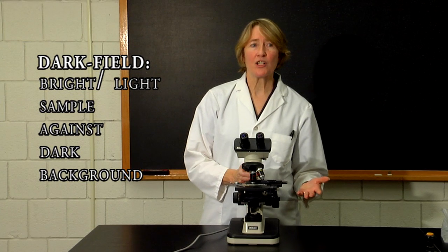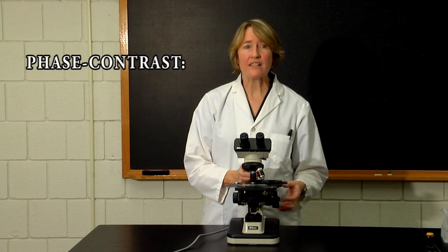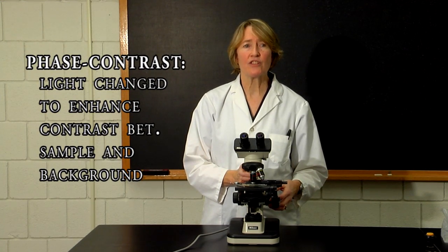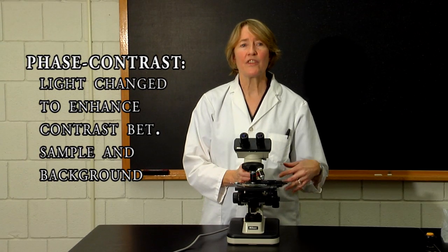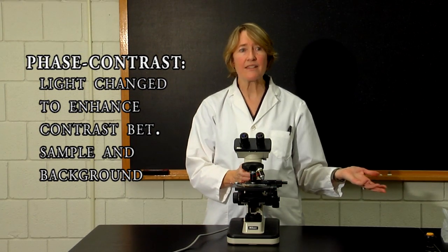In dark field microscopy, a transparent object will appear bright or light against a dark background. In phase contrast microscopy, the angle and diffraction of light is changed, so that the contrast of the transparent object against the background is going to be enhanced, so it's going to be easier to see.